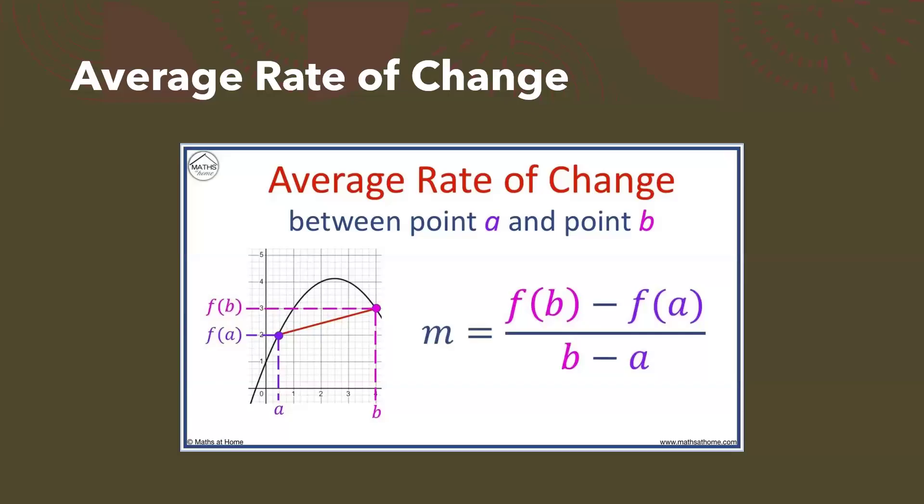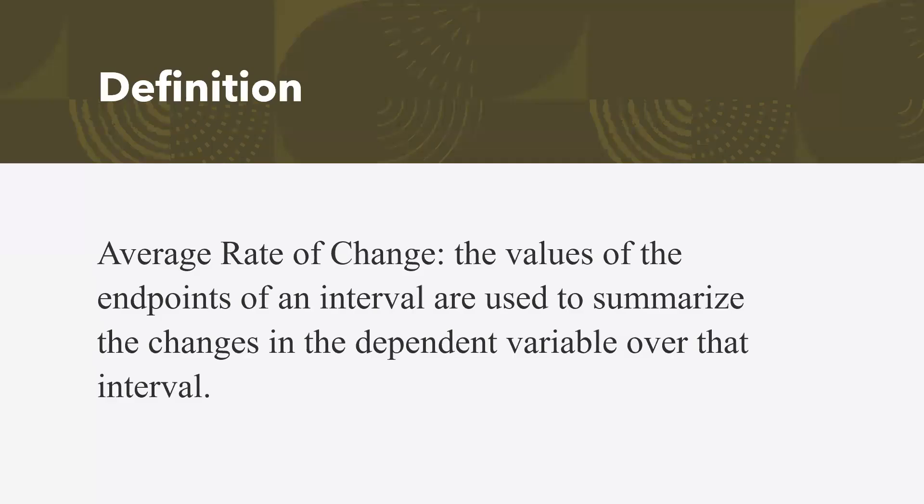Are we ready to apply AROC through an example? Just clarifying average, you don't have to write this down. I'm just going to summarize our thoughts. In formal definition, average rate of change, the values of the end points on an interval are used to summarize the changes in the dependent variable over the interval. That's all we're doing. That's basically saying, how are your y's changing from one X to another?